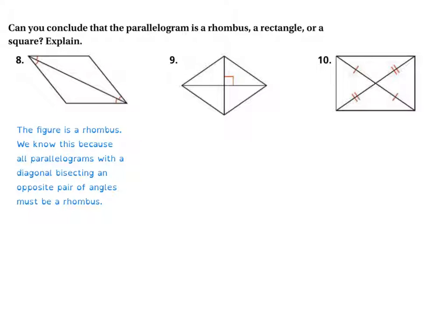Can you conclude that this is one of these types? What do we see? We see that the diagonals are meeting at a 90-degree angle, perpendicular. They're perpendicular to each other. So what do we know about that? We know that any parallelogram with diagonals that are perpendicular must be a rhombus. So this is also a rhombus.